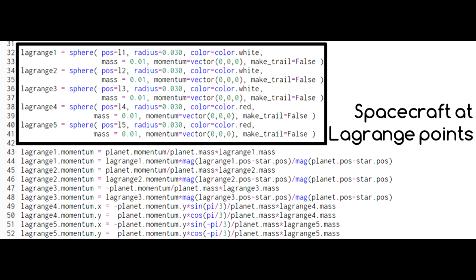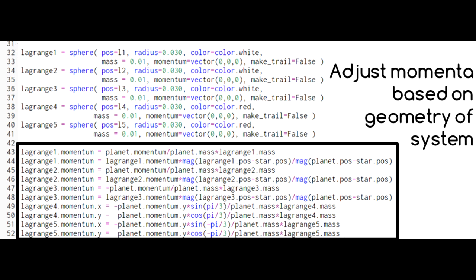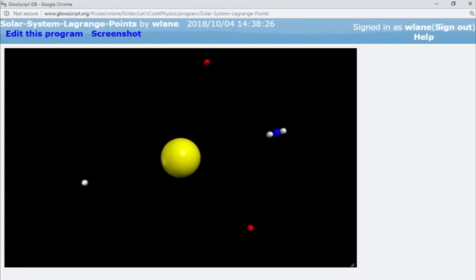Here we create five spacecraft, one at each of the Lagrange points. Notice that we have to adjust their momenta to set them into the correct orbital pattern. Once all this is set up, we can see that the five spacecraft move in sync with the planet.